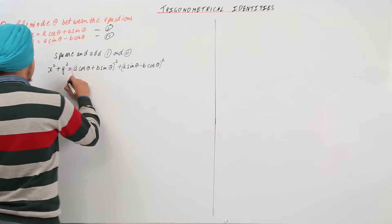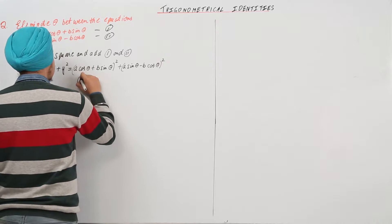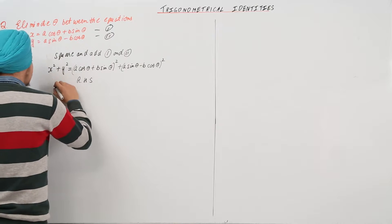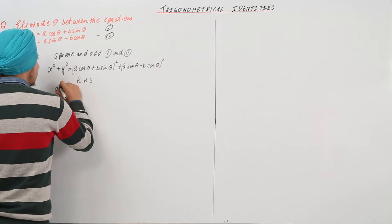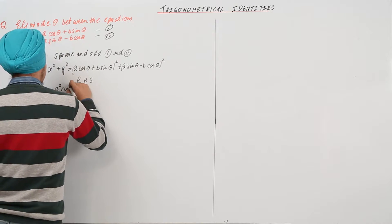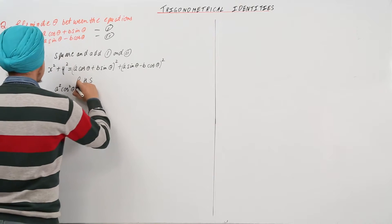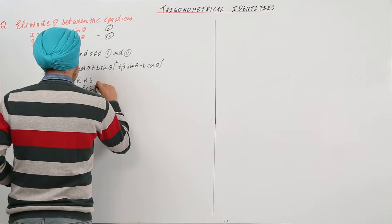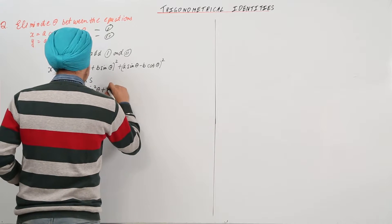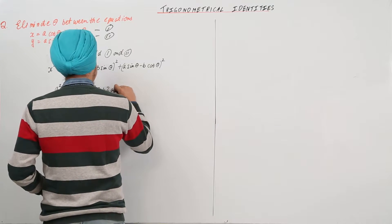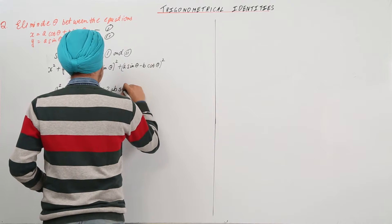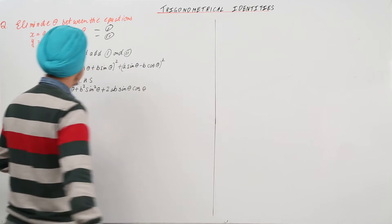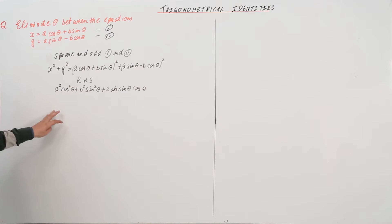Now, what happens here is that we open this bracket. The RHS is: a square cos square theta plus b square sin square theta plus twice a b sin theta cos theta.